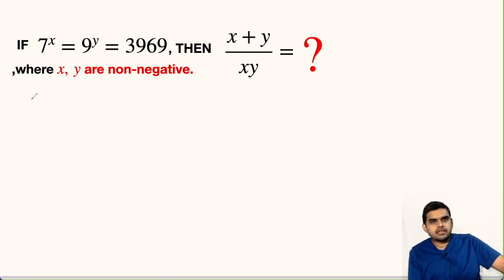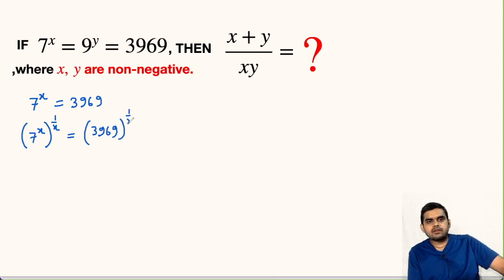So first of all let us equate 7^x with 3969. So we can write 7^x whole power 1/x equals 3969 whole power 1/x. We are taking xth root of both the sides.